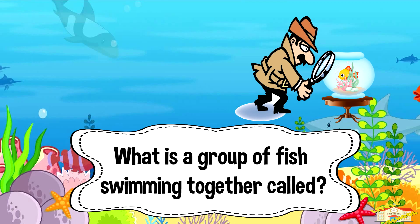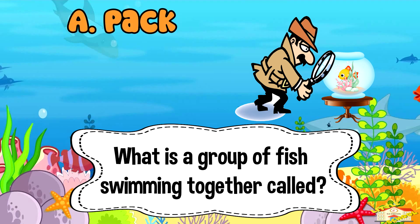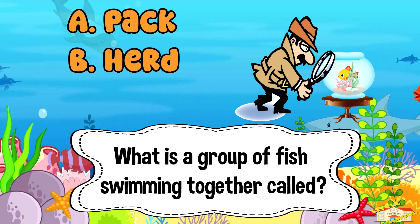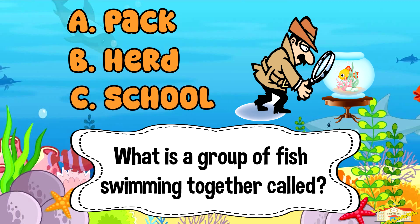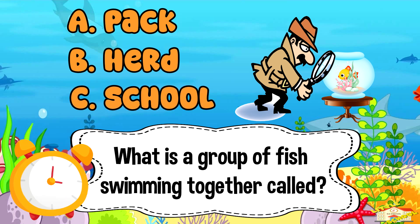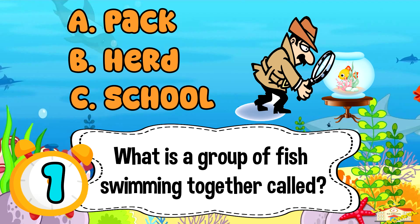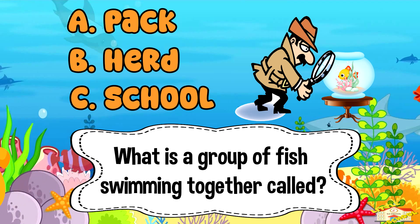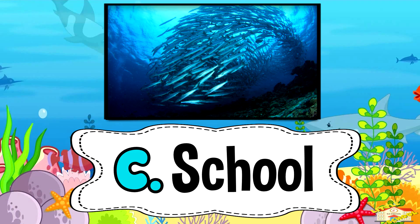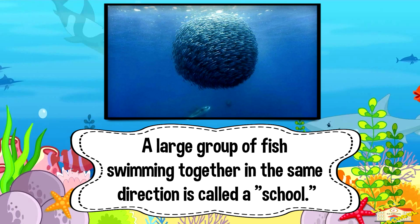What is a group of fish swimming together called? A: pack, B: herd, or C: school? Five, four, three, two, one. A large group of fish swimming together in the same direction is called a school.